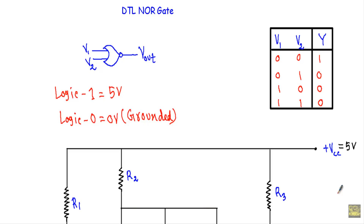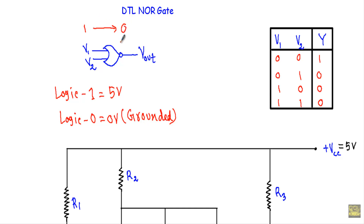In this video I will talk about the operation of a DTL NOR gate. If I have two inputs, V1 and V2, this is our output. For logic 0,0 our output will be at logic 1. For logic 0,1 our output will be at logic 0. For 1,0 our output will be at logic 0. For 1,1 our output will be at logic 0. That means if at least one of the inputs is at logic 1, our output will be at logic 0.